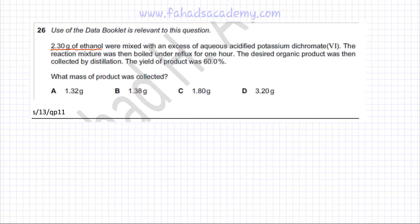2.3 grams of ethanol was mixed with an excess of aqueous acidified potassium dichromate. Potassium dichromate is the oxidizing agent that's going to oxidize ethanol. The reaction mixture was then boiled under reflux for one hour, which means the reaction has completed and all the ethanol has been oxidized.